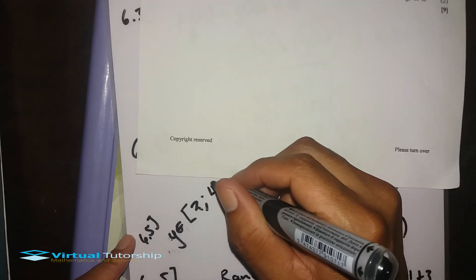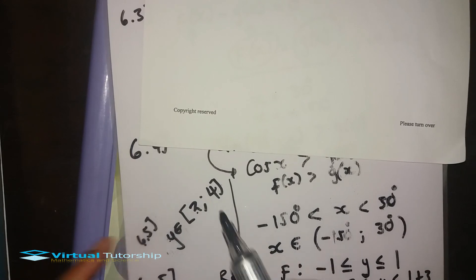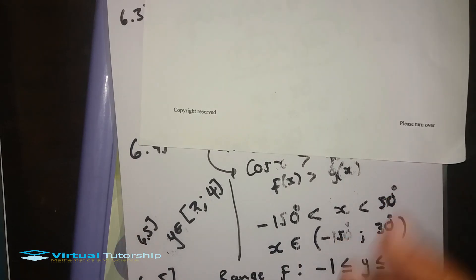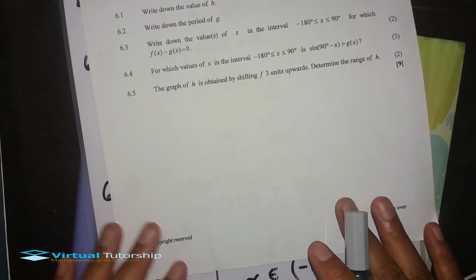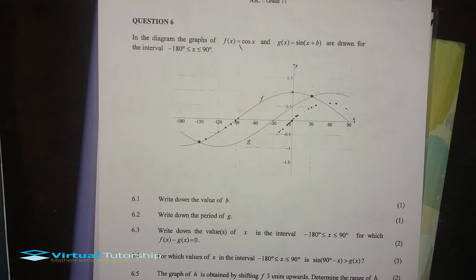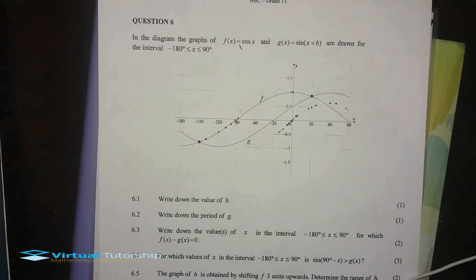So y is the element of [2, 4] — 2 and 4 included — because those are the values where the graph of h is valid. That's Question 6 done. Thanks for watching! Thumbs up the video. I hope you find these videos useful in your studies. Thanks for watching.